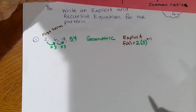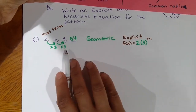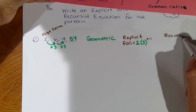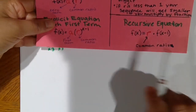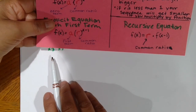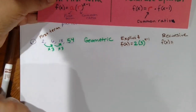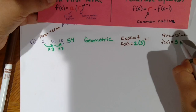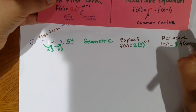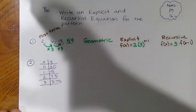Because I'm using the first term, I put x minus 1 as the exponent. So the explicit equation is f(x) = 2 · 3^(x−1). If we plugged in 100, it would give us the 100th term. The recursive equation tells you how the pattern is growing — it's f(x) equals 3 times the previous term.